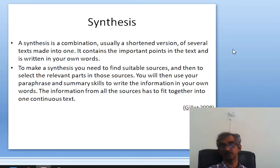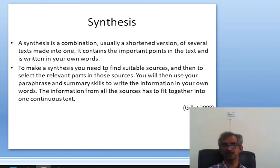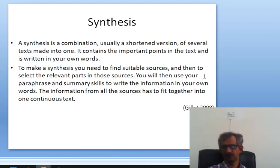Synthesis is one of the most difficult and very important methods of the literature review. It is a combination — usually a shortened version — of several texts made into one, like storytelling. It contains the important points in your own words, mixing various opinions smoothly. To make a synthesis, find suitable sources, select the relevant parts, then use your paraphrase and summary skills so that information from all sources fits together into one continuous text.